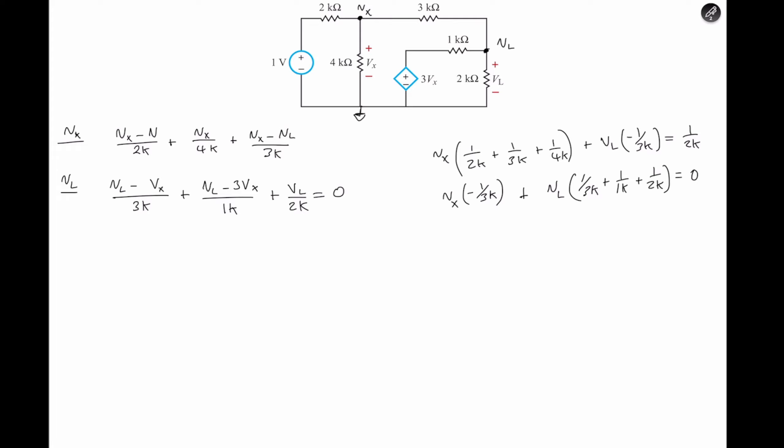Simultaneously solving these equations, two equations, two unknowns, we get Vx is equal to 1.0476 volts, Vl is equal to 1.905 volts. So here we have Vx, and to find Vl, basically the voltage at terminal Vl is the voltage across the two kilo ohms resistor.